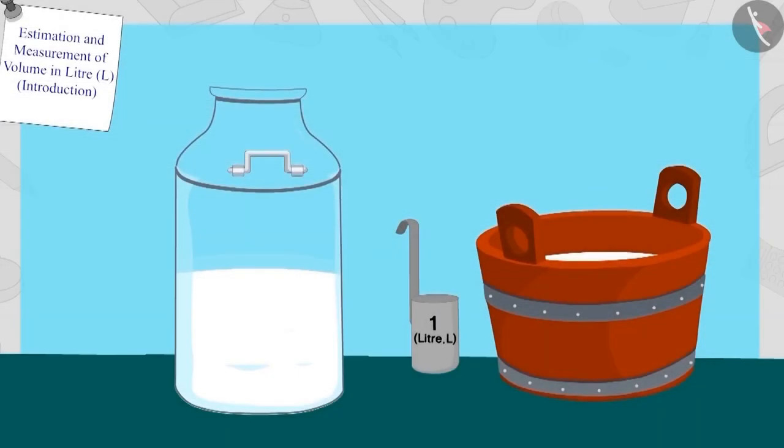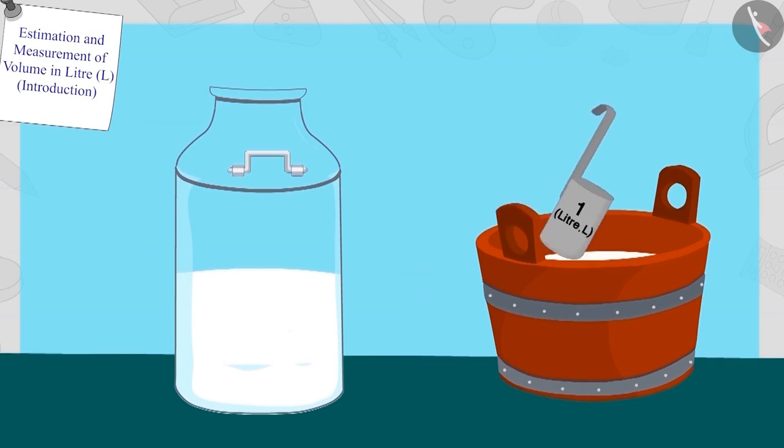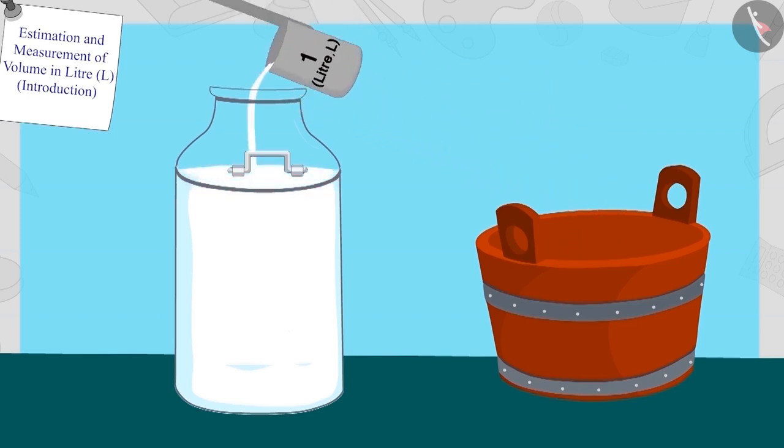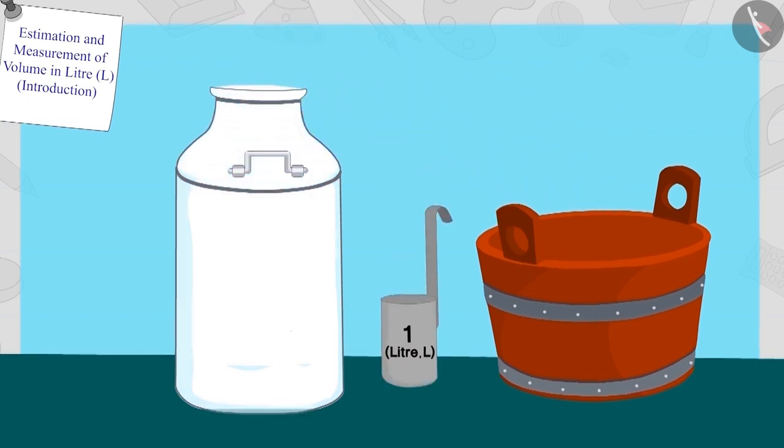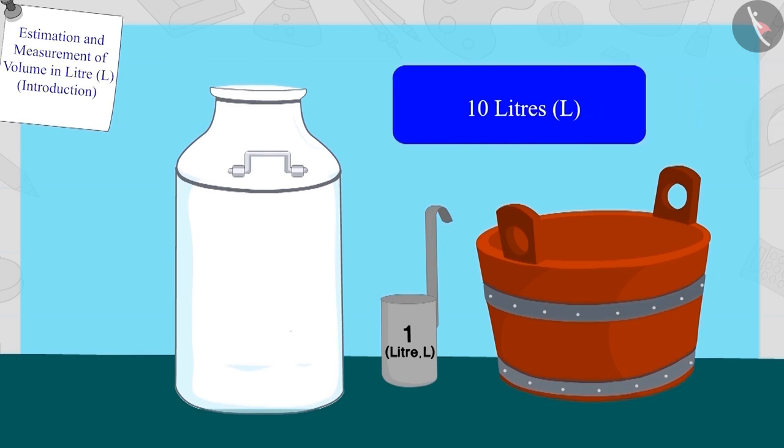Well done! Your answer is absolutely correct. After pouring six, seven, eight, nine, and ten liters of milk, the can was fully filled. Hence, the capacity of this can is ten liters.